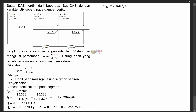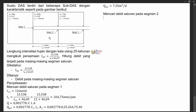Selanjutnya kita akan mencari debit di segmen 2, yaitu berada di inlet 2. Sebagian orang mungkin berpikir untuk mencari debit di inlet 2 dengan menganalisis segmen 1 dan segmen 2 secara terpisah lalu hasilnya ditambahkan, tapi cara seperti itu adalah salah. Kita tidak menganggap segmen 1 dan segmen 2 terpisah, tetapi menganalisis seolah-olah segmen 1 dan segmen 2 digabung.